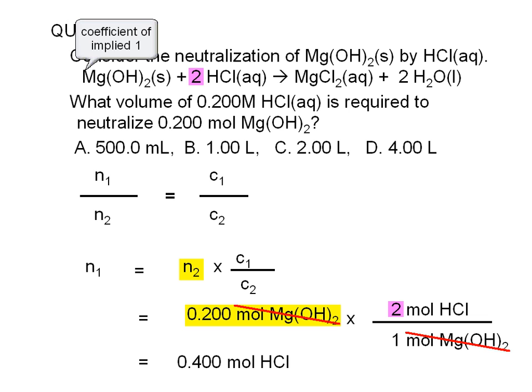Note that we keep 3 significant digits in our answer since the least precise term in our calculation, 0.200, has only 3 significant digits. The numbers 2 and 1 in the conversion factor are exact.